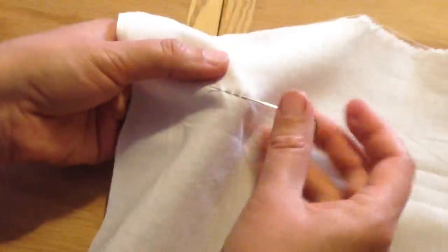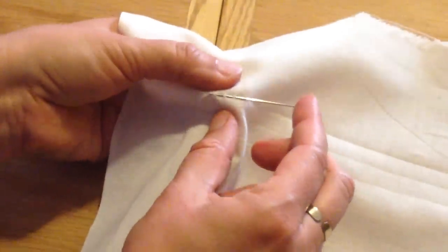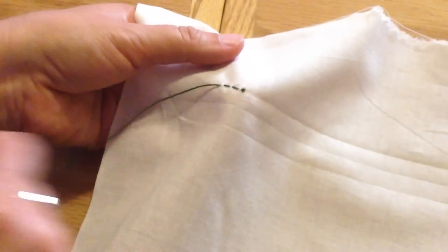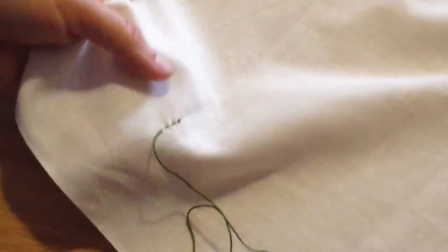You can see how large they are in the front. They're going to be very small in the back. I'm going to pull my thread through just a little bit, peeking out. That's okay.